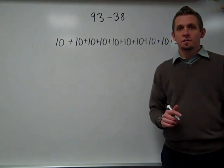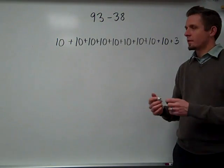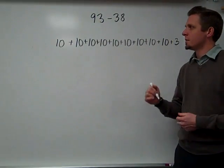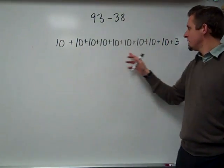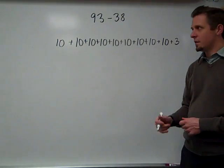I once saw a girl solve a subtraction problem using this next method on a different problem. So I applied it to this particular problem, 93 minus 38. She first built the 90 with 10s and a 3. So 9 tens plus 3. There's a 93.